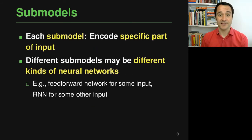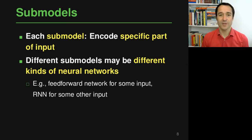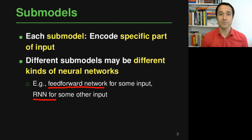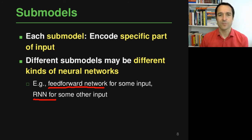Each sub-model essentially encodes one part of the input. The key advantage is that we can have different kinds of sub-models suited for different kinds of inputs. If a simple feed forward network is best for one part, we use that. If some input is naturally a sequence of words, we use a recurrent neural network for that part. For every part of the input we can have a different kind of neural network that summarizes the information in that part, and then at the end all of this gets composed so that all the information is summarized.